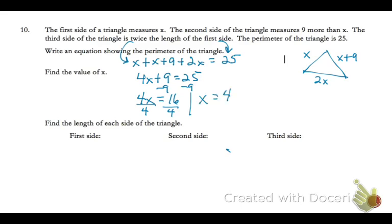but more importantly, now we know the length of the first side of the triangle. And we don't know the units, so we'll just leave it as 4. The second side is whatever the first side is plus 9. So our second side will be 13. And then our third side is 2 times whatever the first side was. And that's 8.